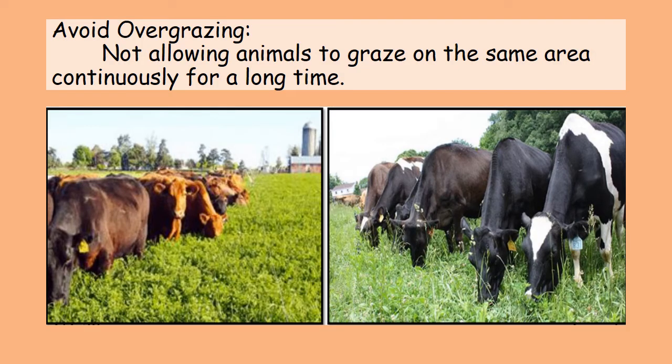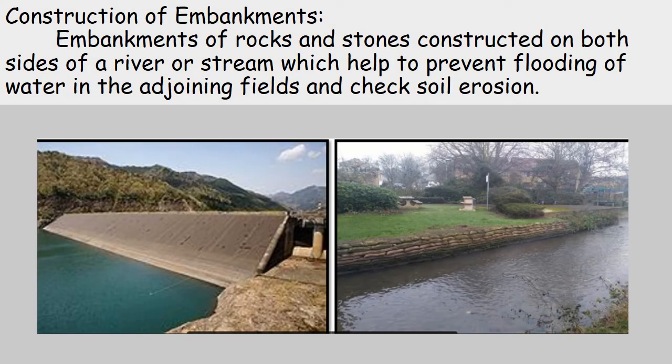Avoid Overgrazing. Not allowing animals to graze on the same area continuously for a long time. Construction of Embankments — embankments of rocks and stones constructed on both sides of a river or stream help to prevent flooding of water in the adjoining fields and check soil erosion.